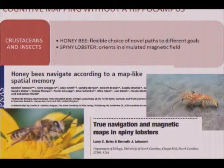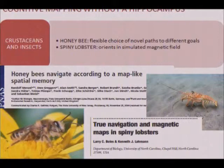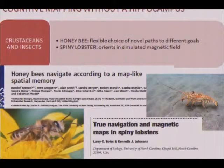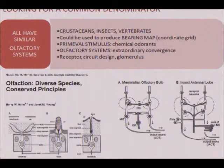Not only can't we locate the subfields in other vertebrate taxa, but now we have evidence in both crustaceans and insects that cognitive mapping can be demonstrated in animals without a medial pallium — without a hippocampus at all. So we really have to ask: what is the common denominator of the cognitive map across such a wide range of taxa and nervous systems?